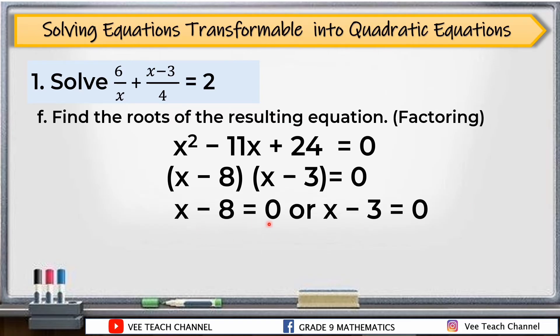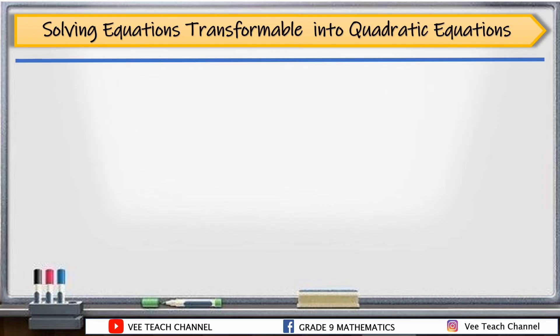Next, we equate these factors to 0: (x - 8) = 0 or (x - 3) = 0. Now we can solve for x. Applying the addition property of equality, we add 8 to both sides of the first equation to get x = 8. Similarly, add 3 to both sides of the second equation to get x = 3.